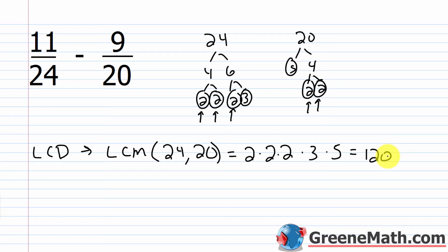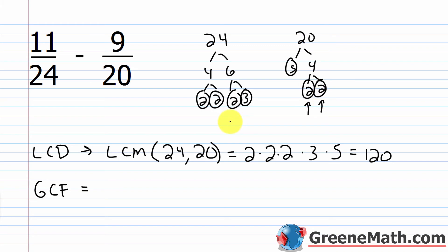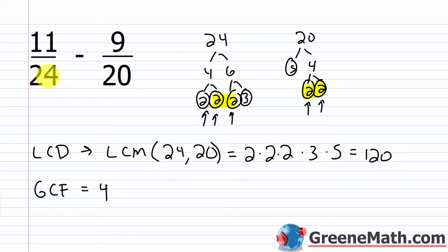For the GCF of 24 and 20 — the greatest common factor or greatest common divisor — when building that list, it's only numbers common to everything. The only thing common to everything is 2. I have 2 factors of 2 in 20's factorization and 3 factors of 2 in 24's. With the GCF, it's got to be common to everything, so I go with 2 factors of 2, which is 4. The GCF is 4 — a smaller number than 24 and 20. The LCD at 120 is a larger number.